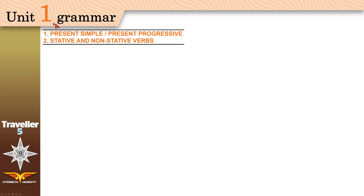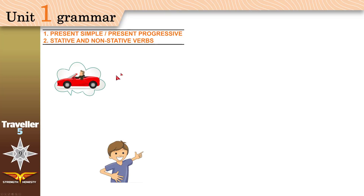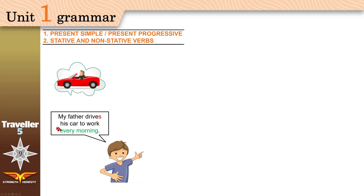Unit one grammar: present simple and present progressive, stative and non-stative verbs. Now, I know we have covered these topics in previous years, but please continue watching, as in Traveler Five we will dig deeper into these topics. We will learn new things that we didn't learn in the previous years.